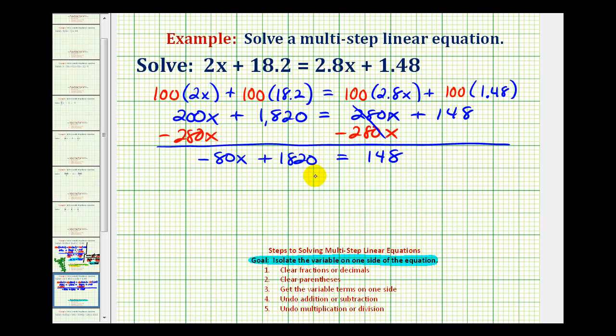Now we have our basic two-step equation. We want to undo this multiplication here, as well as this addition here. So we'll undo the addition first. We'll subtract 1820 on both sides. This would be zero, so we have negative 80x equals this difference here.